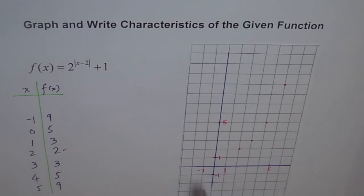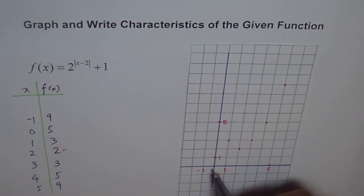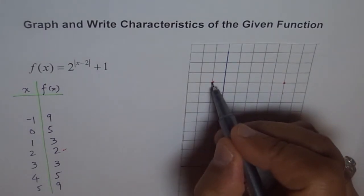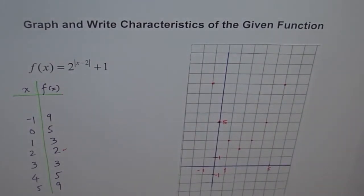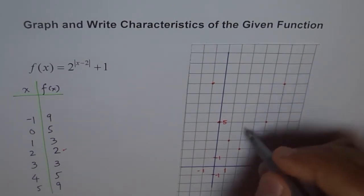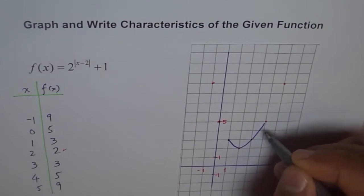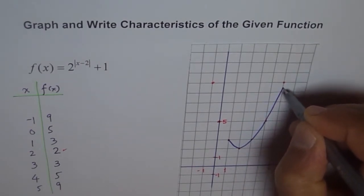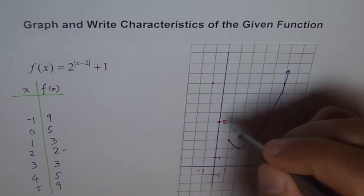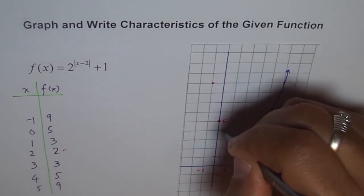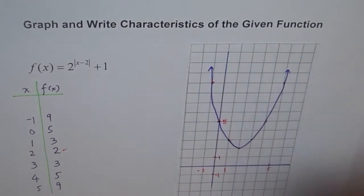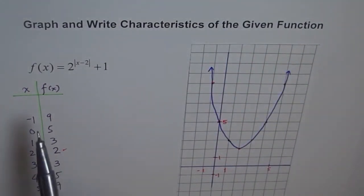On the other side: at x equals 1, the value is 3; at x equals 0, the value is 5; at x equals negative 1, the value is 9. It is symmetrical. Let's join these points to get our graph — that is how our function looks.